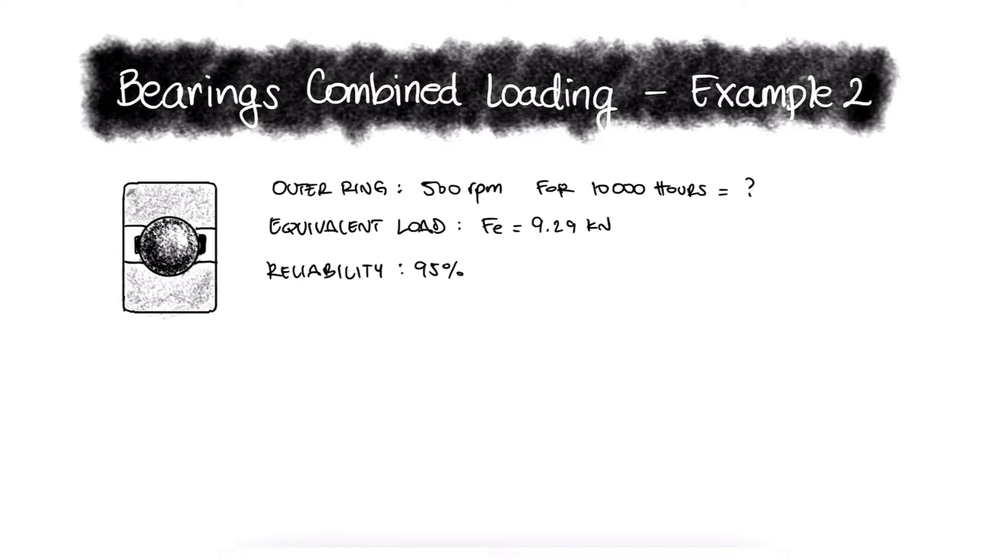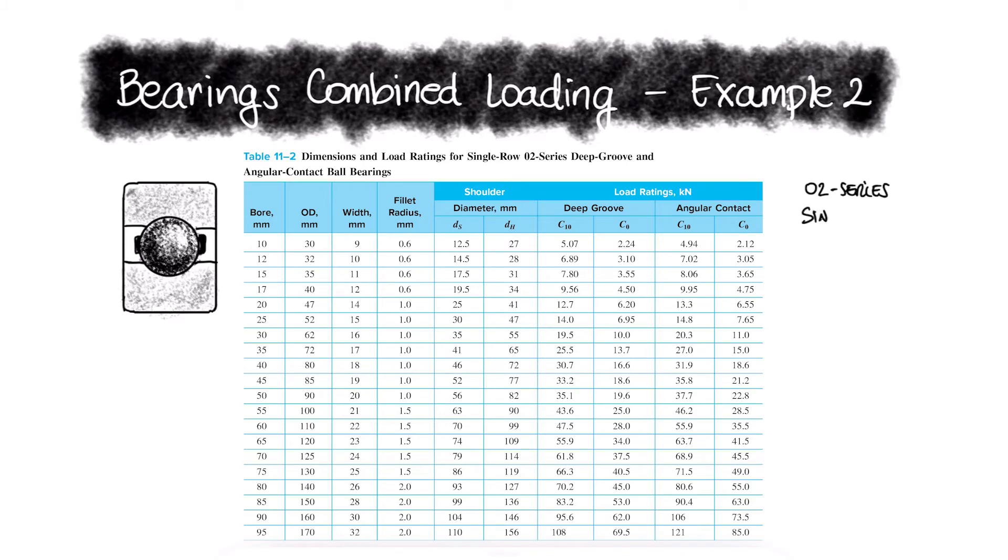To find if this bearing will be able to carry the load, we will calculate the theoretical load rating C10 and compare it to the rated load for this particular 65mm bore bearing, which is rated for a 55.9kN load.